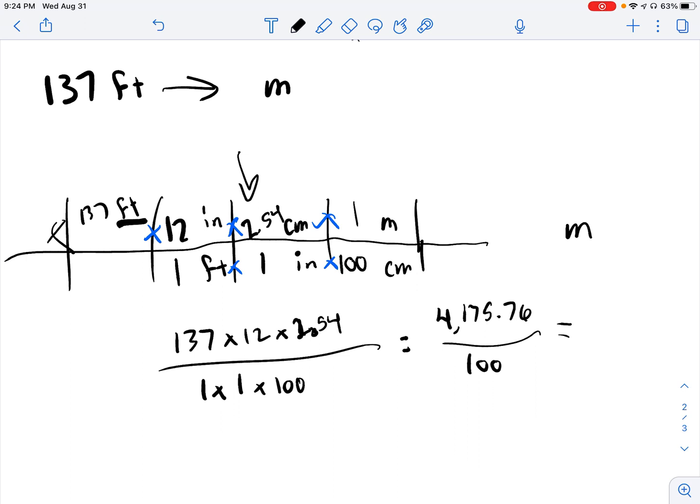So now your last step here is to solve your fractions. You're going to take 4,175.76 divided by 100. And you should get 41.76 meters. That's where we're going to round that one.